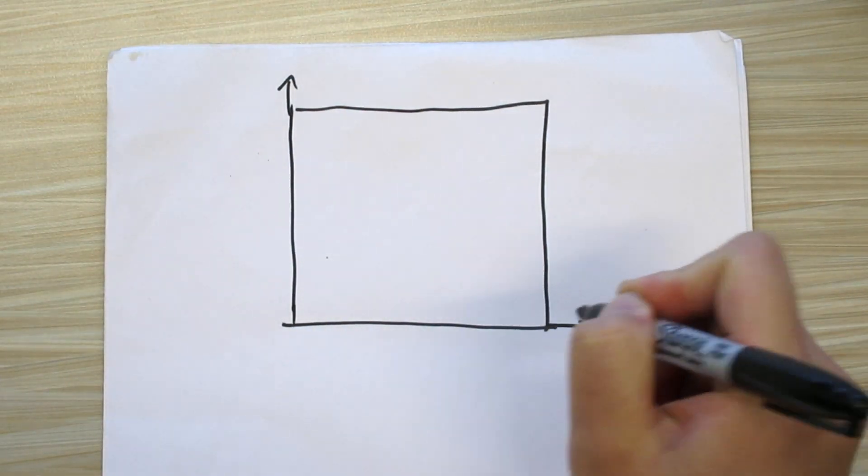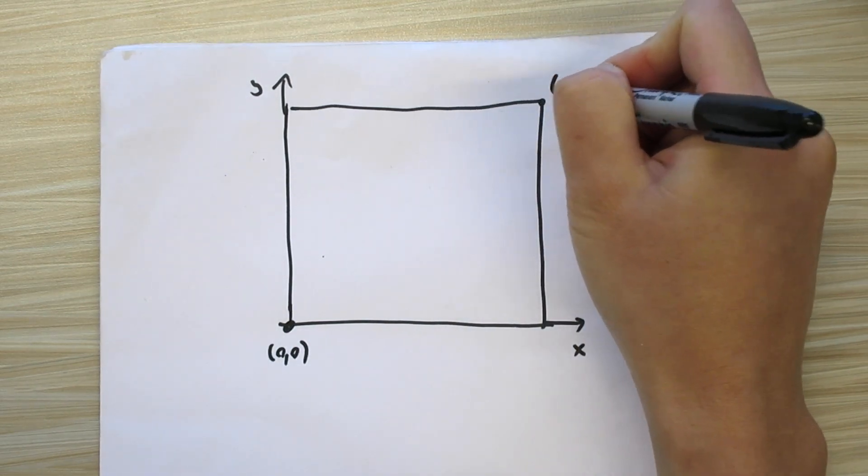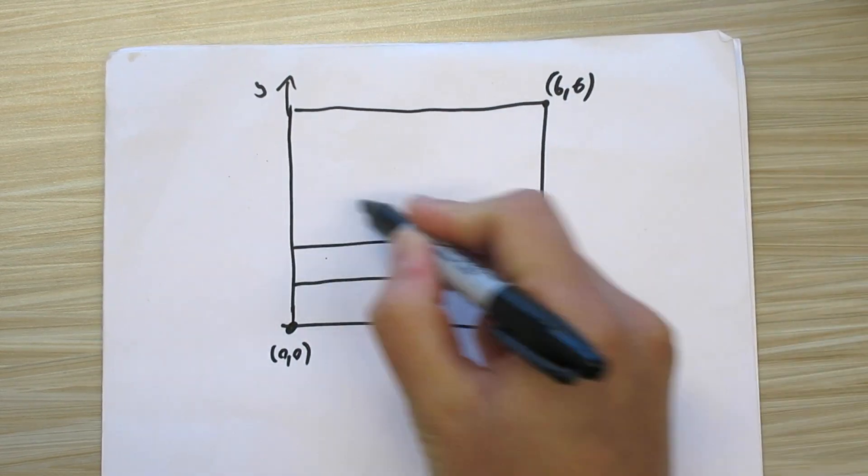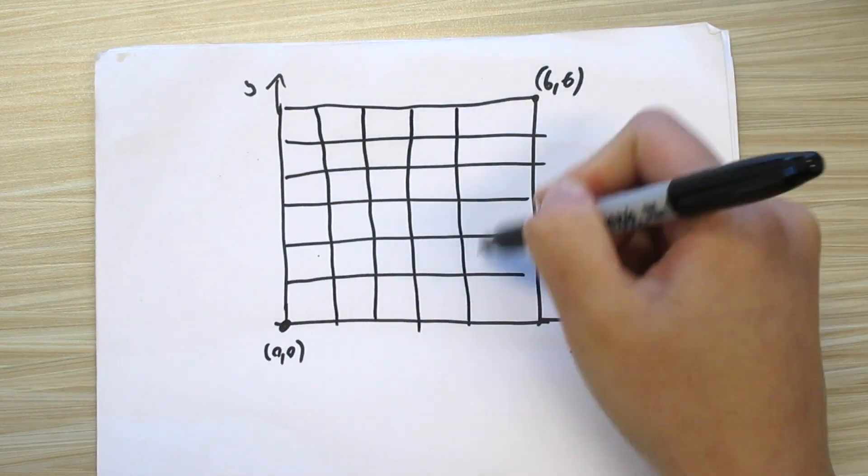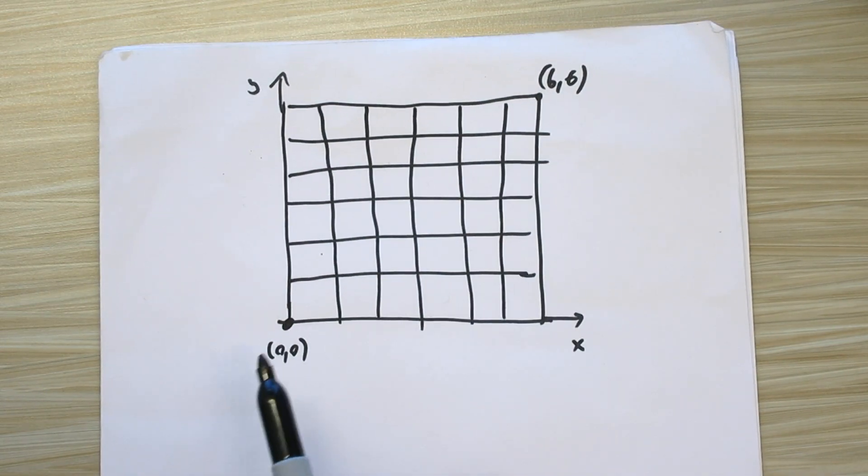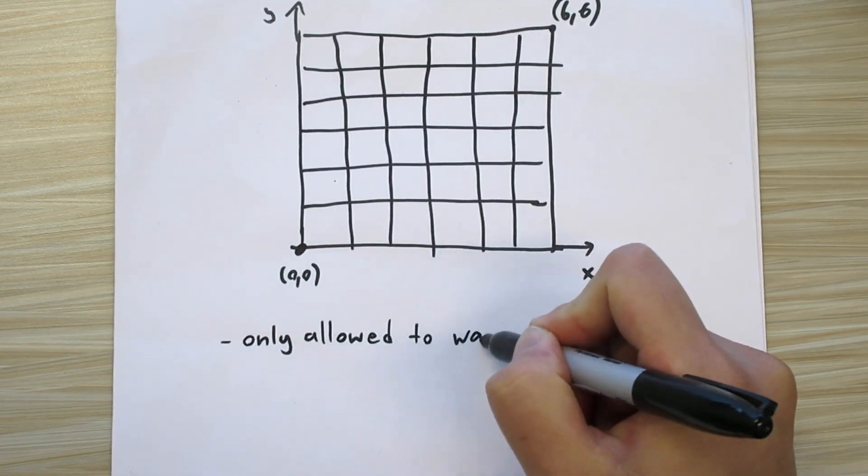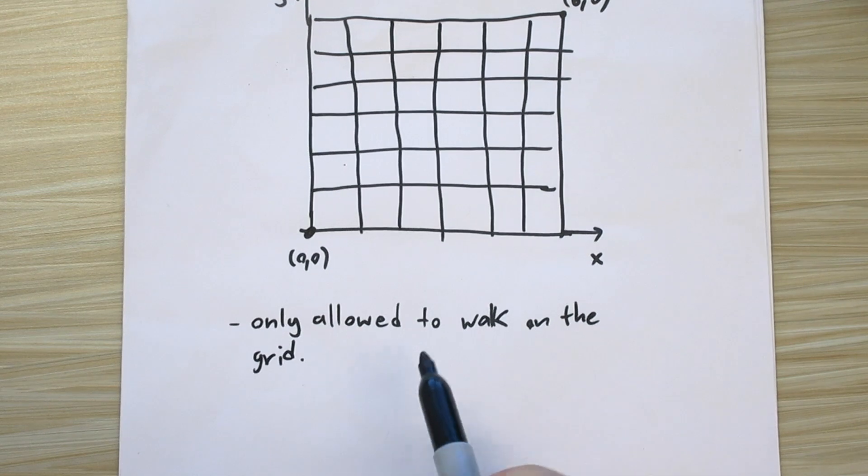You start off on XY plane at (0,0) and you want to travel to (6,6). You want to travel from (0,0) to (6,6), you're only allowed to walk on the grid.